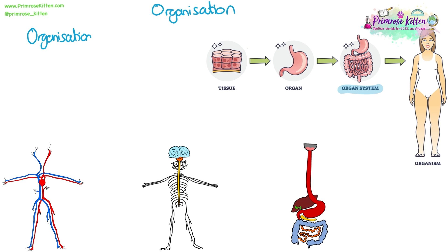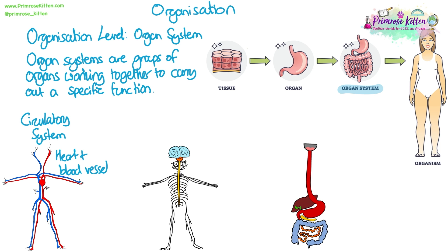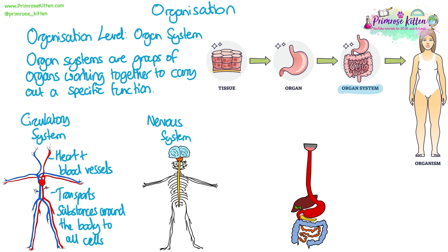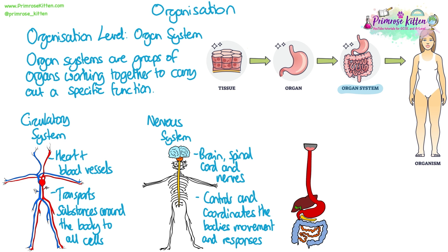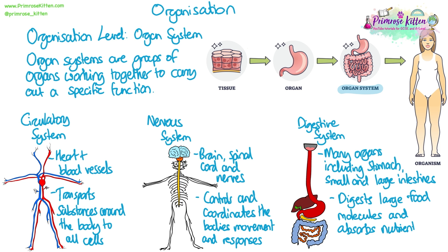The next level of organisation up from an organ is an organ system. Organ systems are groups of organs that work together to carry out a specific function. Some examples from humans: the circulatory system, made up of the heart and blood vessels, functions to transport substances around the body; the nervous system, made up of the brain, spinal cord and all the nerves, functions to control and coordinate the body; and the digestive system, which contains many organs including the stomach, small and large intestines, liver, mouth, gallbladder and oesophagus, with the function of digesting and absorbing nutrients.